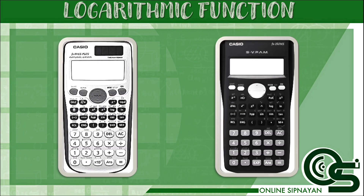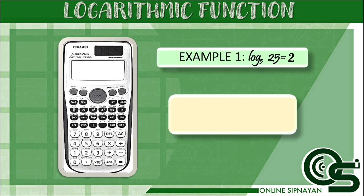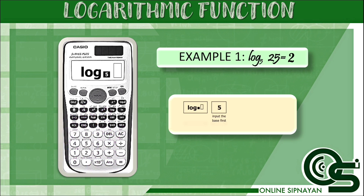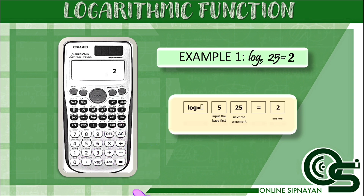You can also use a scientific calculator to solve logarithms. Get your scientific calculator and follow the steps. The first given is logarithm of 25 with base 5 is equal to 2. If your calculator can input the base and the argument, input first the base, which is 5, then the argument, which is 25, then press equal — it will be equal to 2.